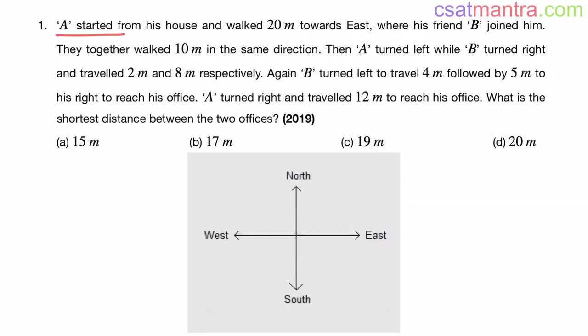Now A started from his house. In directions problems, always assume the starting point as center point. Okay, always start from center. So A is starting from his house at the center and walked 20 meters towards east, where his friend B joined him. Here B joins. So here A and B are there now.